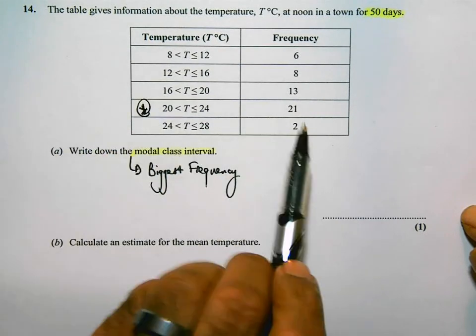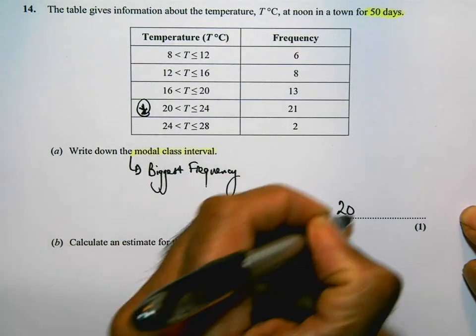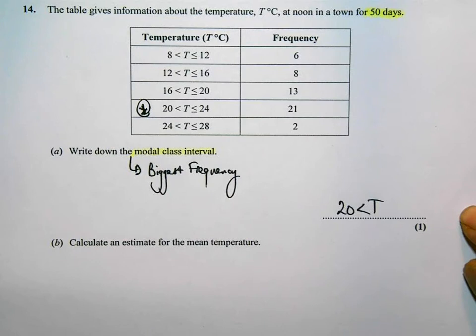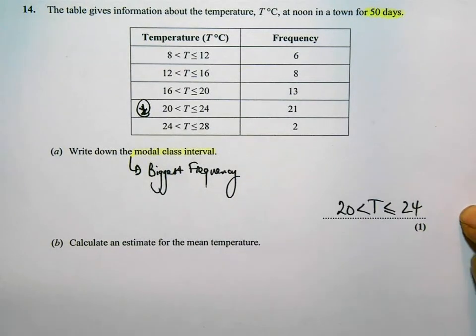This one here has the biggest frequency. And don't write this one. It's the group that we have to write down. So, 20 is less than T is less than or equal to 24. And that is the modal class.